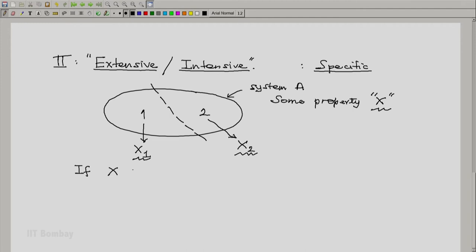If X turns out to be X1 plus X2, then we say that X is an extensive property because it depends on the extent.